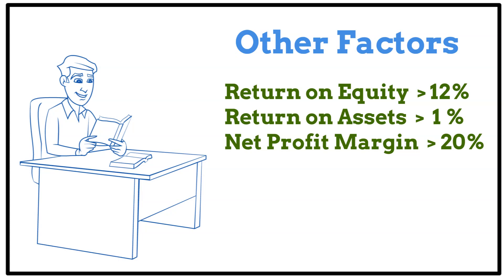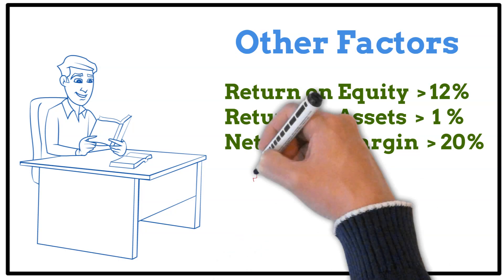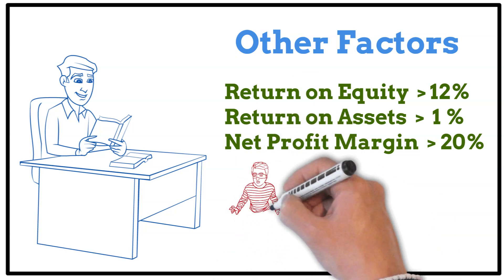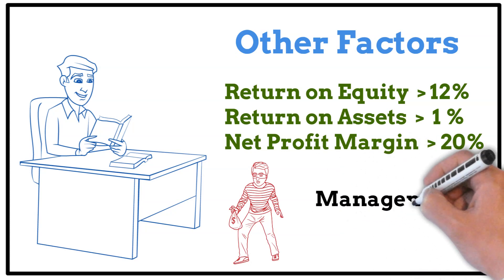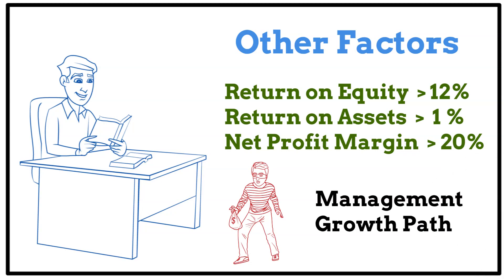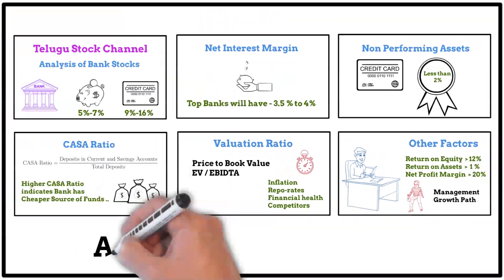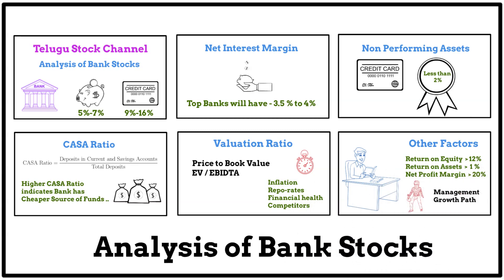We compare all six factors to define the best banks and buy at fair value for the best returns. However, fraudulent banks may also manipulate these financial ratios. Overall, the Net Interest Margin — calculated from average bank deposits and loans — should ideally be between 3.5% and 4% for a good bank. Lower NPA and a higher CASA ratio are also key indicators.